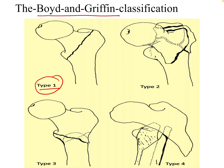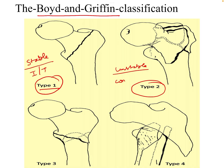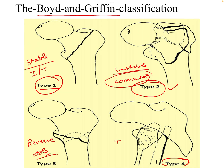Type 1 are the stable fractures where the fracture line is along the intertrochanteric line. Type 2 are the unstable fractures which present with a posterior-medial combination. Type 3 are the reverse oblique fractures. Type 4 are intertrochanteric fractures with subtrochanteric extension.